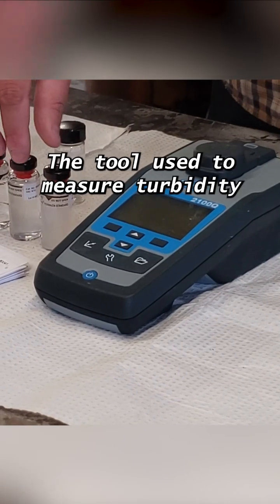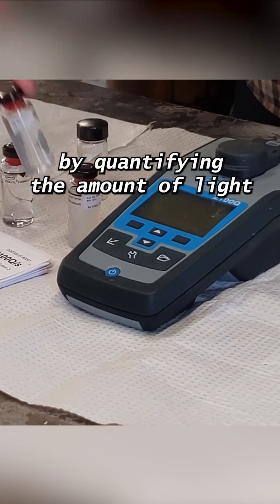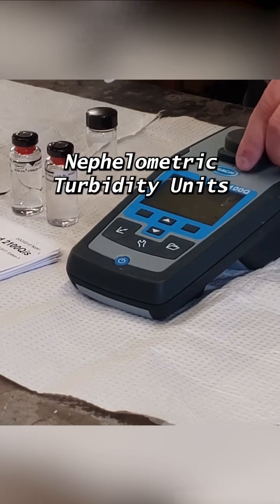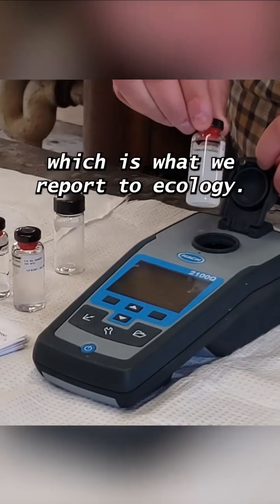The tool we use to measure turbidity is called a turbidimeter. It works by quantifying the amount of light that gets scattered by the cloudiness in our water. It gives us a reading in nephelometric turbidity units, or NTU, which is what we report to ecology.